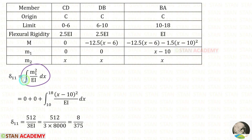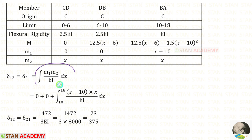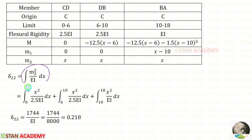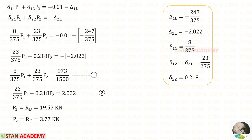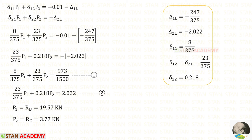After substituting all computed values into the two compatibility equations and simplifying, we obtain two equations. Using a calculator, we solve these two equations to find RB and RC.